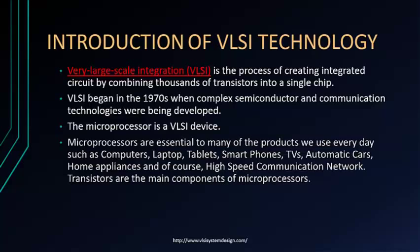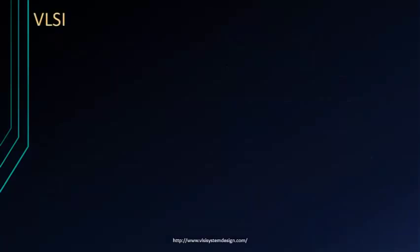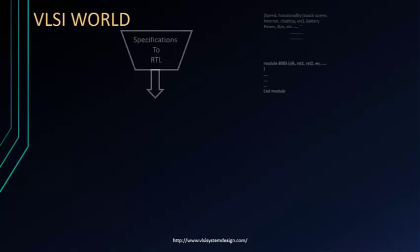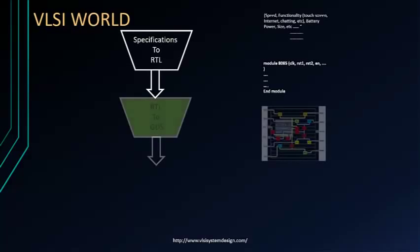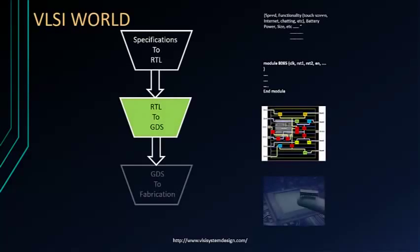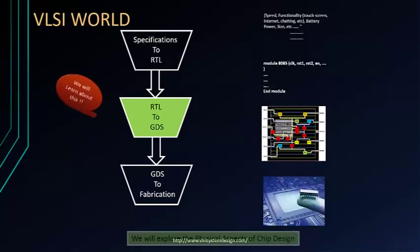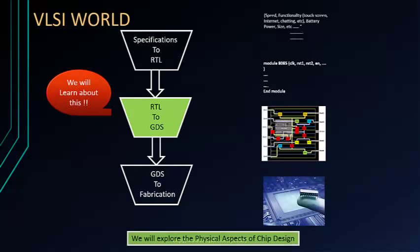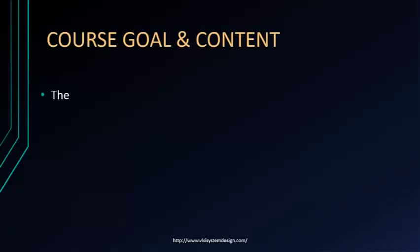We start with basically a VLSI design network. Beginning with specifications, from specifications we write the code, and from code we build the hardware. From the hardware, we go to fabrication. This RTL to GDS section is what we are going to cover.